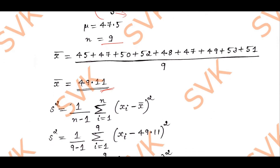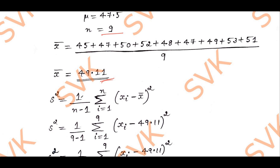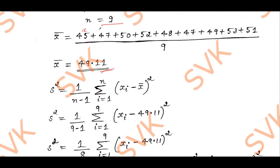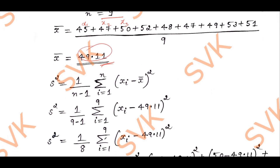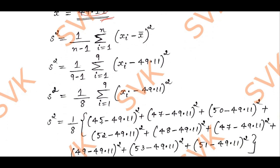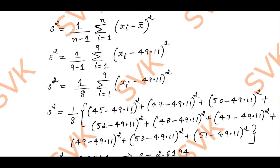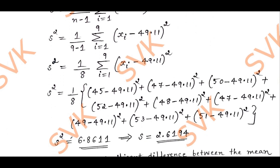After getting x̄, we need to find S². The formula for S² is: (1/(n−1)) × Σ(xᵢ − x̄)². We know all the xᵢ values. Subtract each value from x̄ and square it — for example, (45 − 49.11)² + (47 − 49.11)² and so on — to calculate the value of S².